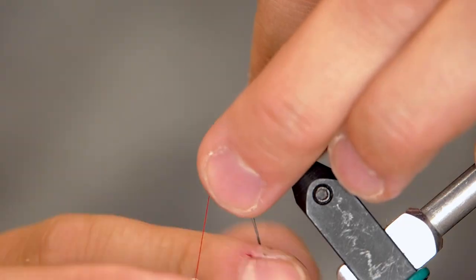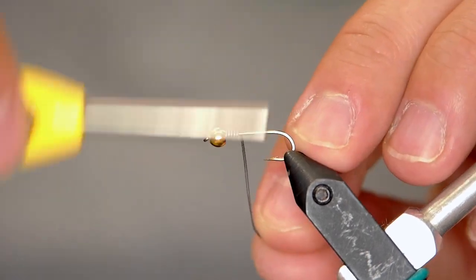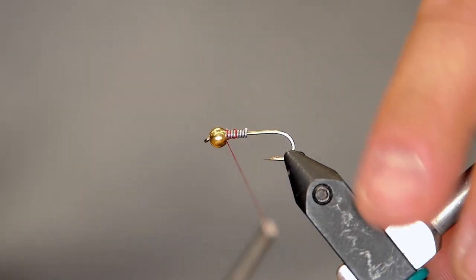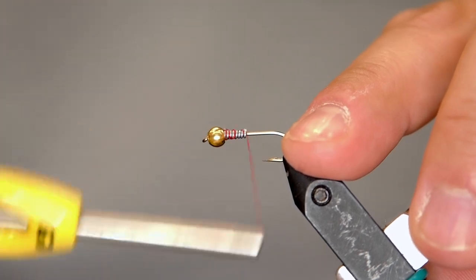Now I'm going to put on just 0.020 lead wire but I'm just wrapping for the thorax. We don't want to go down the whole hook. It's just going to give a little bit more bulk and a little bit more of a natural look to the fly.